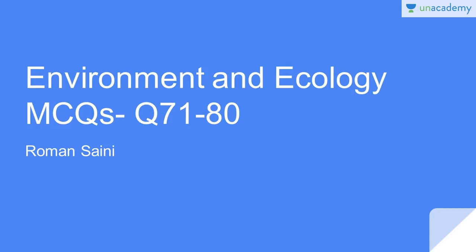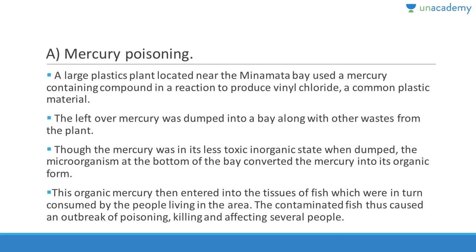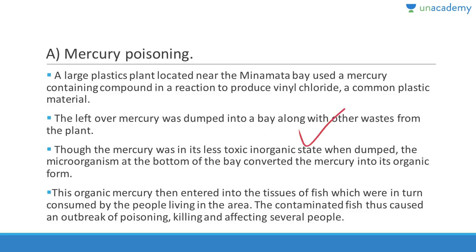Questions 71 to 80. Question 71: Minamata disease is a neurological syndrome caused by severe mercury poisoning. It is not common generally, but in the city of Minamata in Japan it was widespread. A large plastic plant near Minamata Bay used a mercury-containing compound to produce vinyl chloride; the leftover mercury was dumped into the bay. Microorganisms converted it into an organic form, and when people ate fishes or seafood they were poisoned.